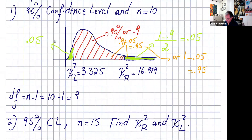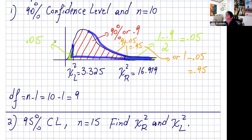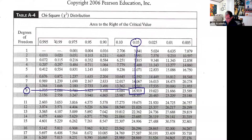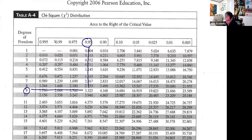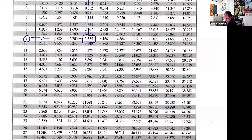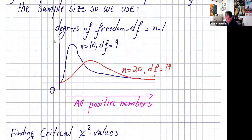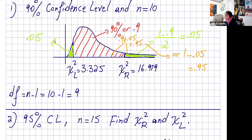Or you can do one minus 0.05 — two ways to find the total area to the right of that value, giving 0.95. Degrees of freedom is nine. Going to the table: the intersection of degrees of freedom nine and 0.95 gives us 3.325. And there we go — 3.325.